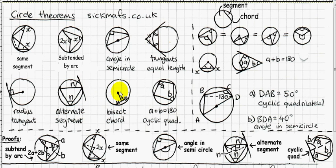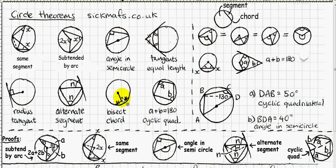If you have a line from the centre of the circle that meets a chord at 90 degrees, it bisects that chord. Conversely, if a line from the centre bisects a chord, it must be perpendicular — at 90 degrees — to that chord.